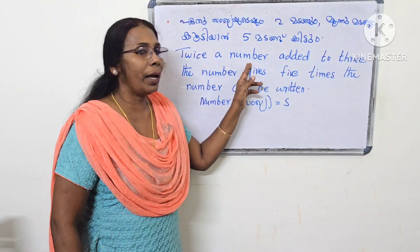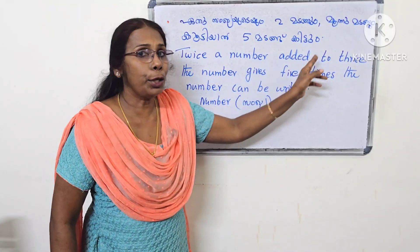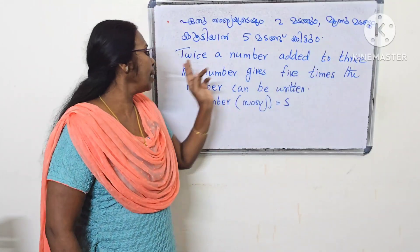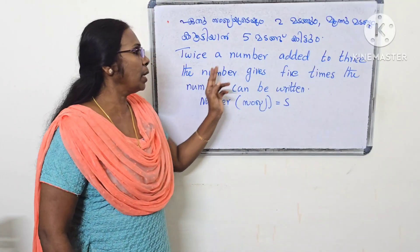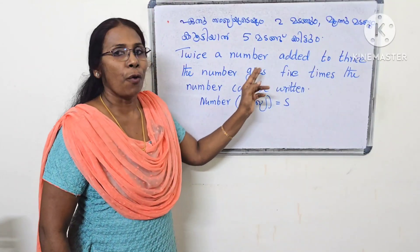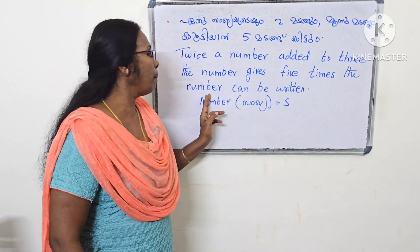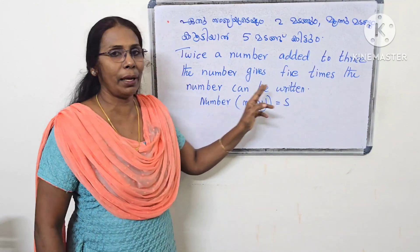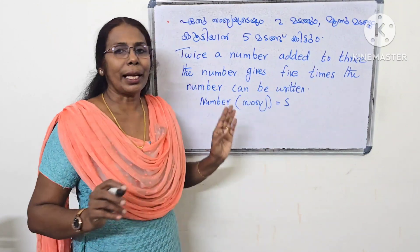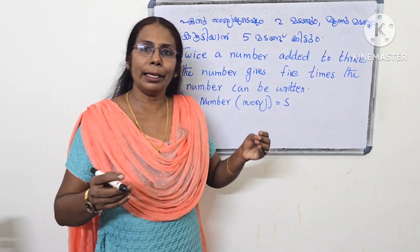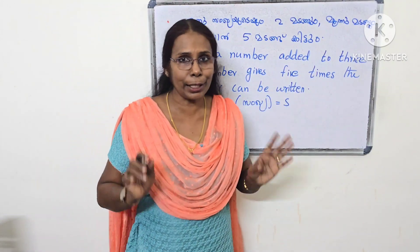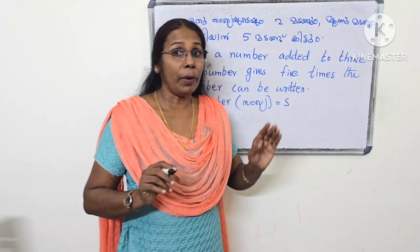Twice a number added to twice the number gives five times the number — that can be written using a number x. Here we have a question.